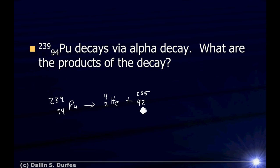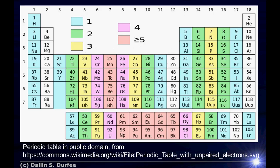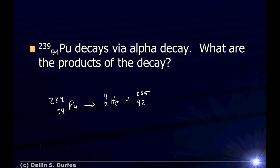I just need to know what element 92 is. I look on a table of the elements, and element 92 is uranium. So my decay products are an alpha particle and a uranium-235 nucleus.